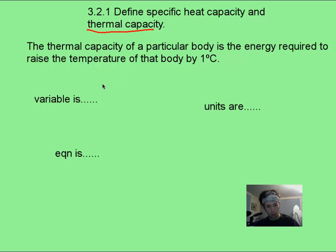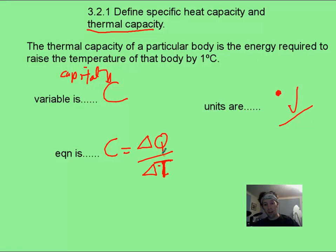Now, the variable that we usually use for this is going to be a capital C, and say that it's going to be delta Q, or the change in energy per change in temperature. Now, because of this equation, hopefully you can figure out that the units for energy are going to be joules and below it's going to be degrees Celsius. So, joules per degree Celsius, or you could also do joules per Kelvin. It wouldn't matter.